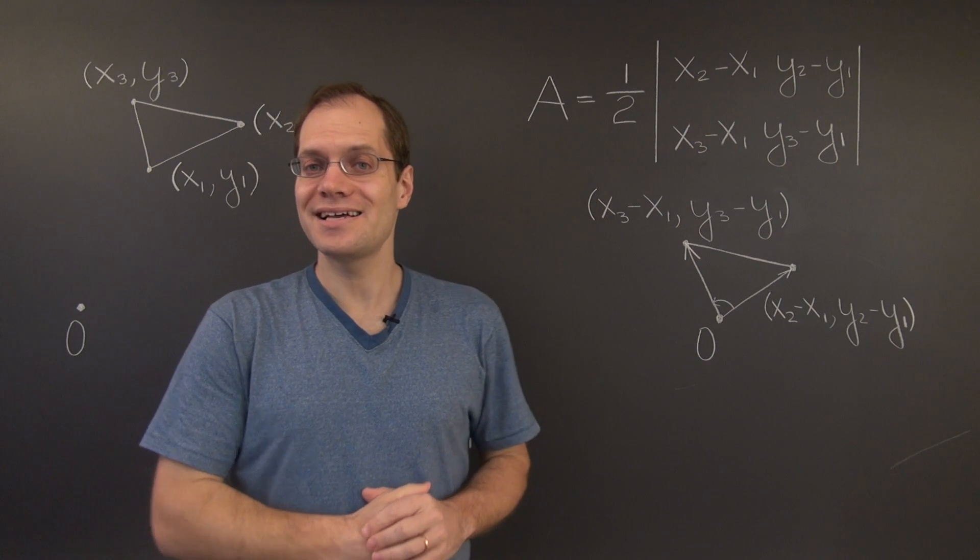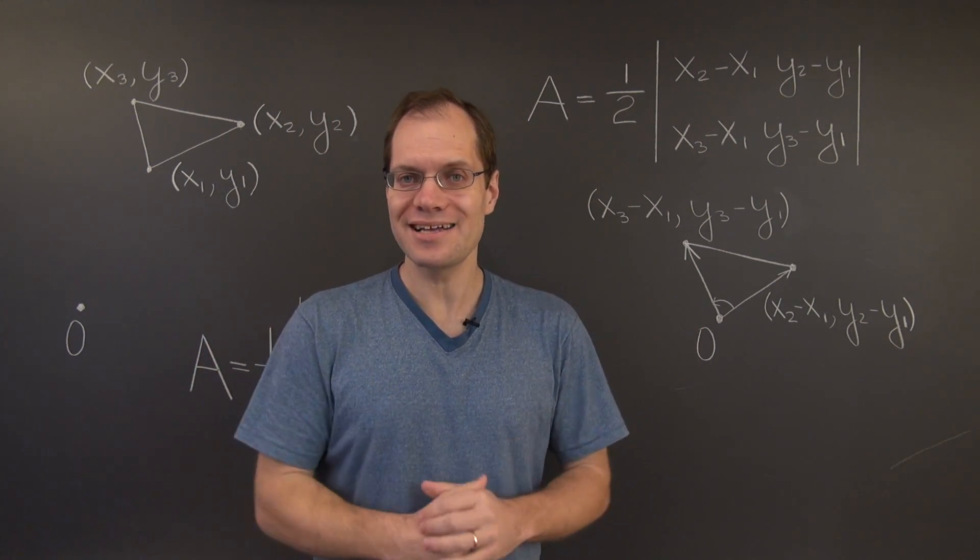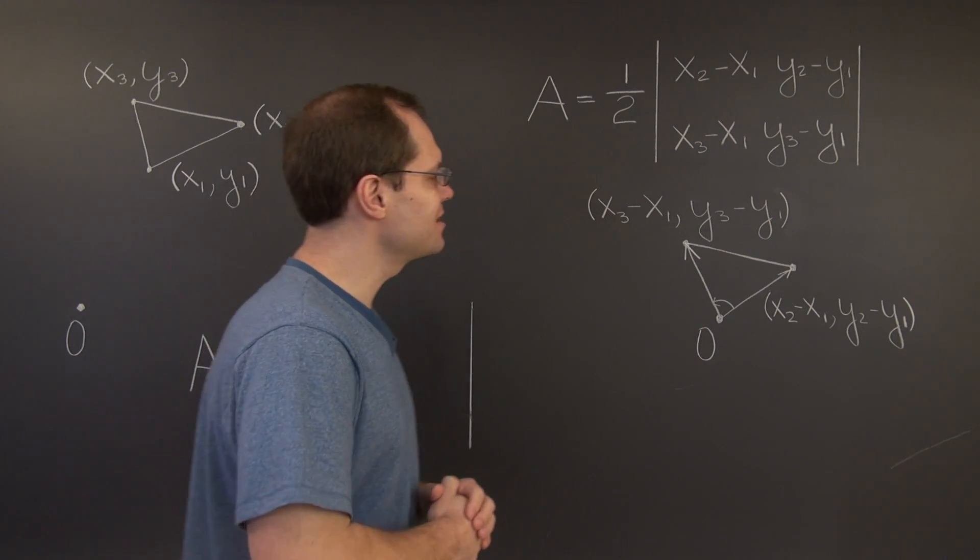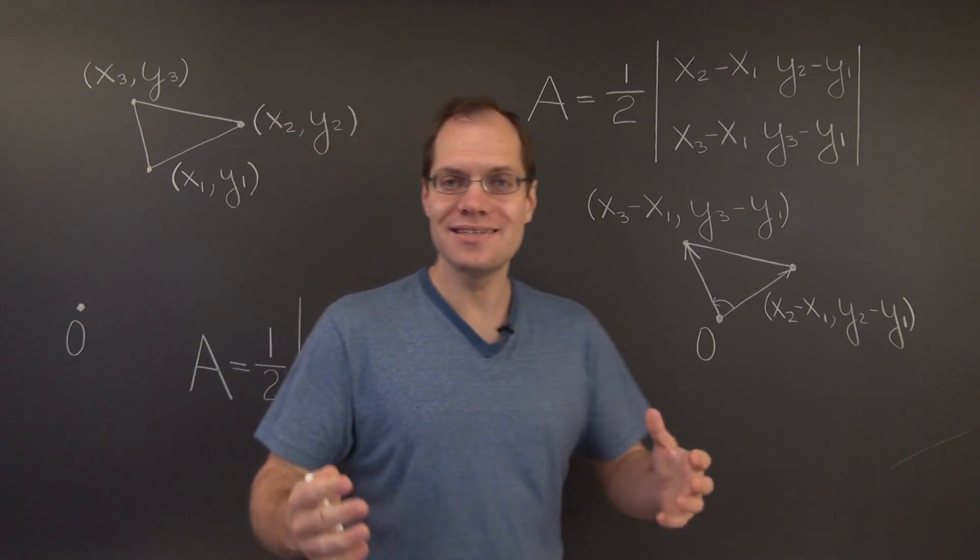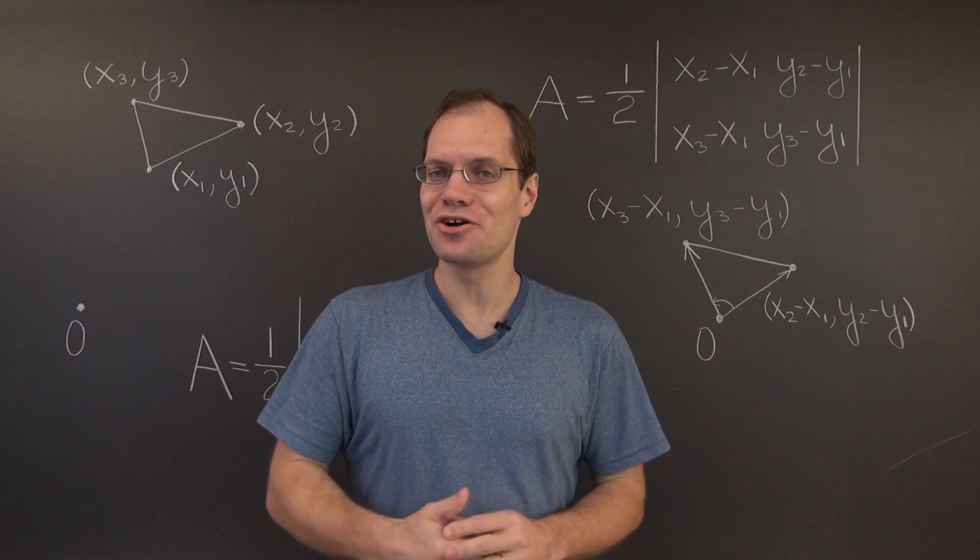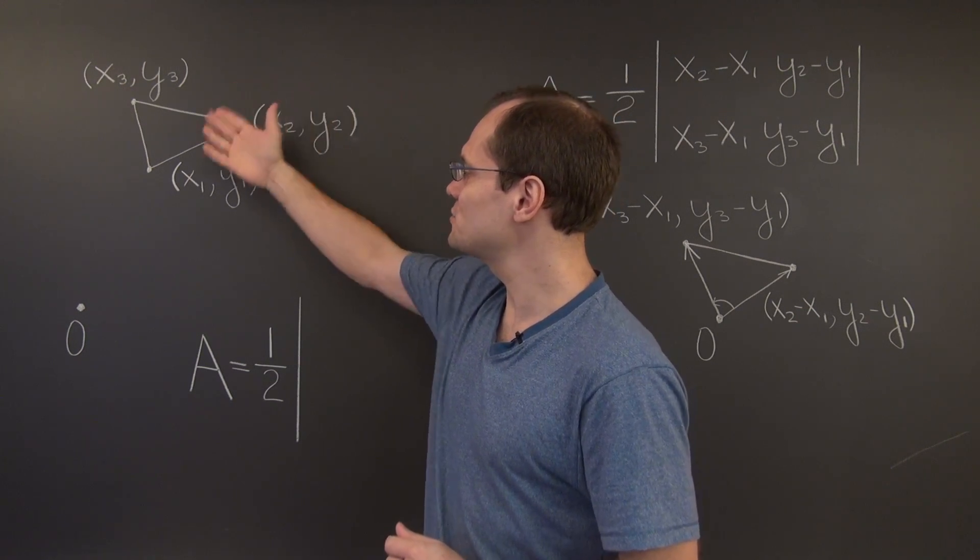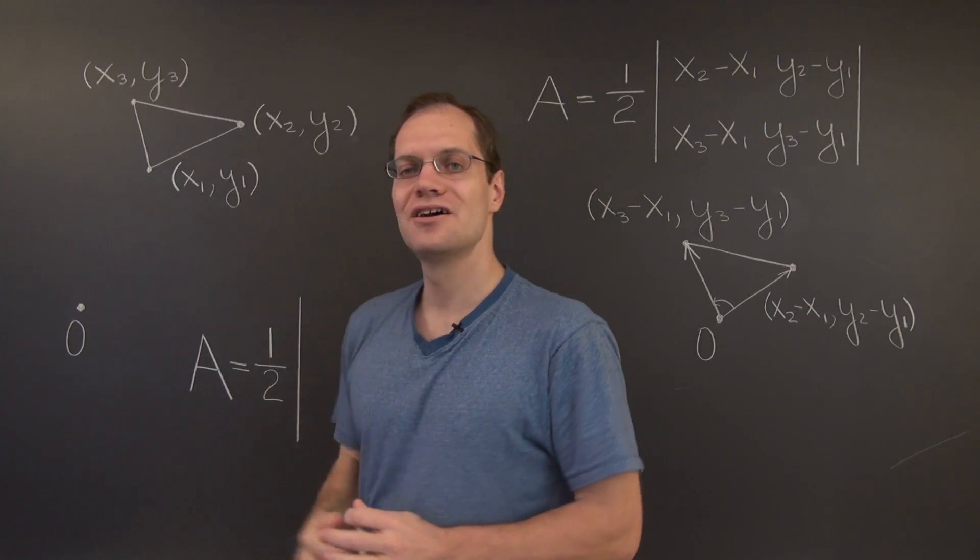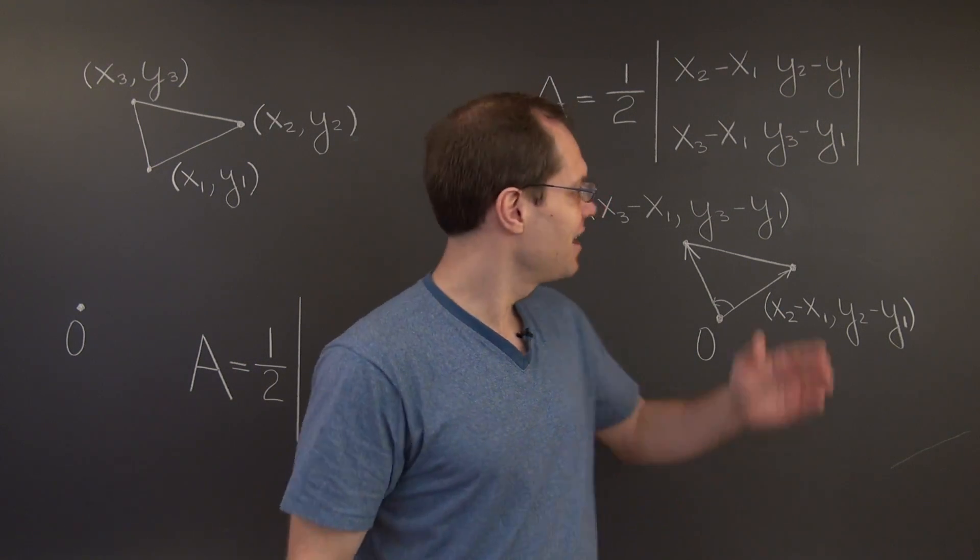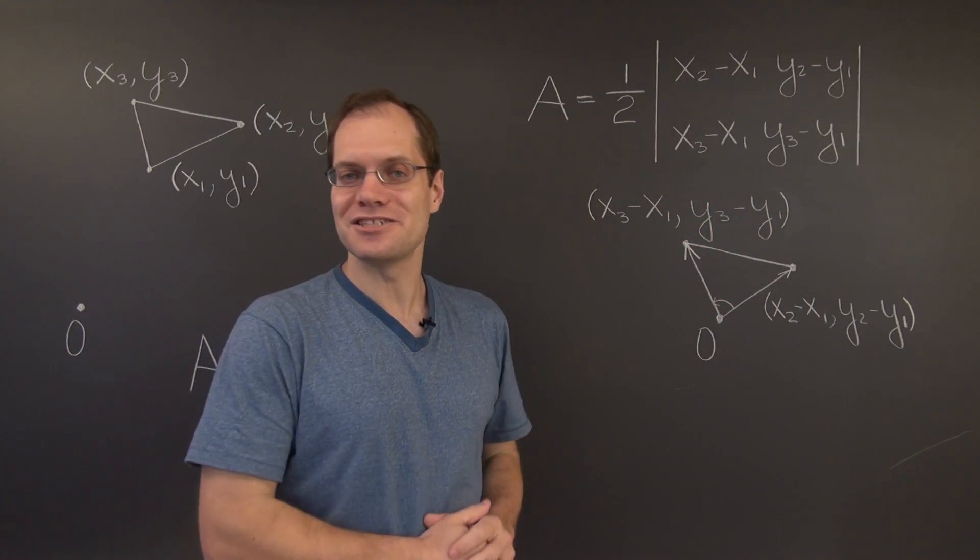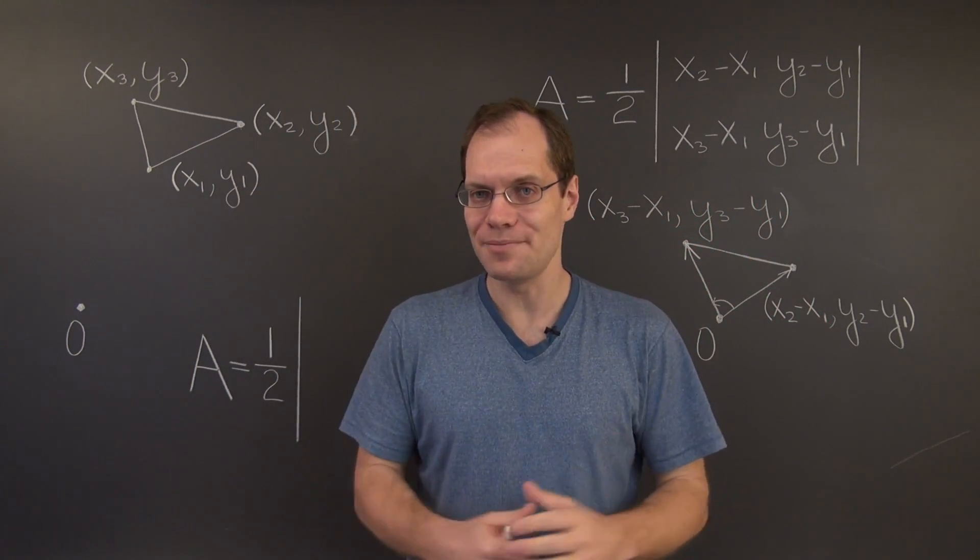Alright, this is the answer, and it's actually the right answer, and there is absolutely nothing wrong with it. We did solve, we did reach our goal, which was to find an expression for the area of the triangle given the Cartesian coordinates of its vertices. And here is that expression, so it solves the problem.